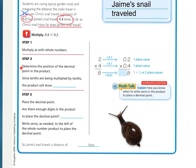Then we need to determine the position of the decimal point in the product. Since tenths are being multiplied by tenths, the product will show hundredths, because there's one decimal place value times two decimal place values — so we need to have two decimal place values in our answer. The product will show hundredths.